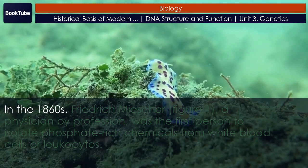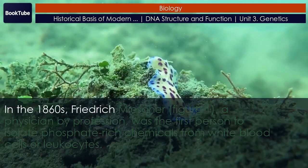In the 1860s, Friedrich Miescher, Figure 1, a physician by profession, was the first person to isolate phosphate-rich chemicals from white blood cells, or leukocytes. He named these chemicals — which would eventually be known as RNA and DNA — 'nuclein,' because they were isolated from the nuclei of the cells.